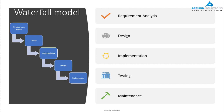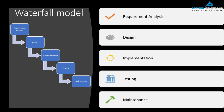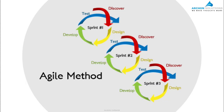In waterfall, a project team starts with requirement analysis — the planning phase. After that is done and the scope is determined, it enters the design phase. Only when the technical design document is completed does it go into implementation, where developers complete the full build. Then it goes into testing, where testers test the whole application, and only when they are satisfied does it go into the maintenance phase — a strictly sequential approach.